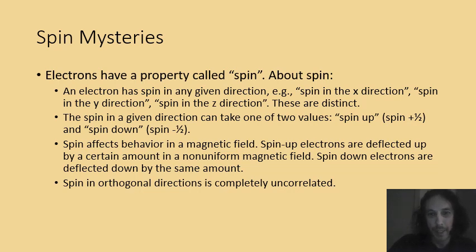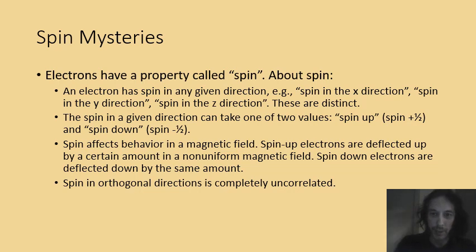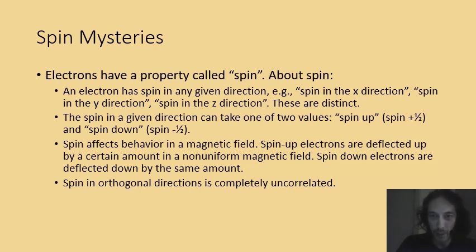Electrons have a spin in each direction in space, so you can change the orientation of the magnet used to detect the spin. You can change its orientation and get different results as to whether the electron is spin up or spin down in different directions. Spin in the x direction is completely uncorrelated with spin in the y direction, so if you take measurements in two orthogonal directions there's no correlation at all. But if you take directions that differ by less than 90 degrees then there's some correlation.